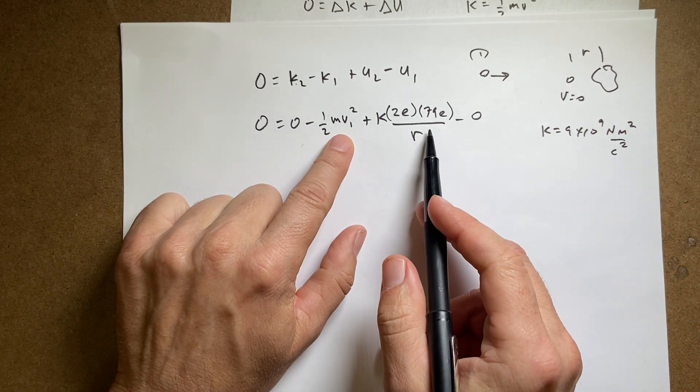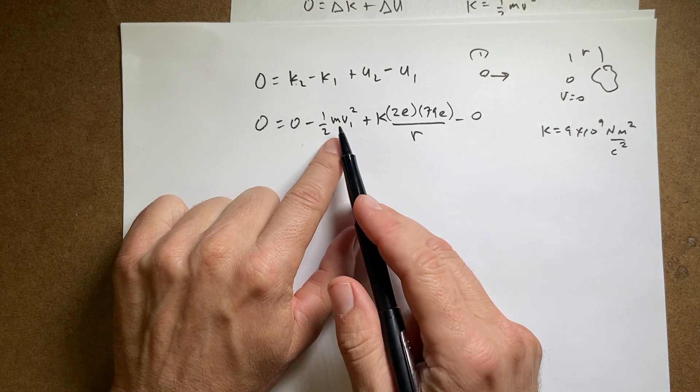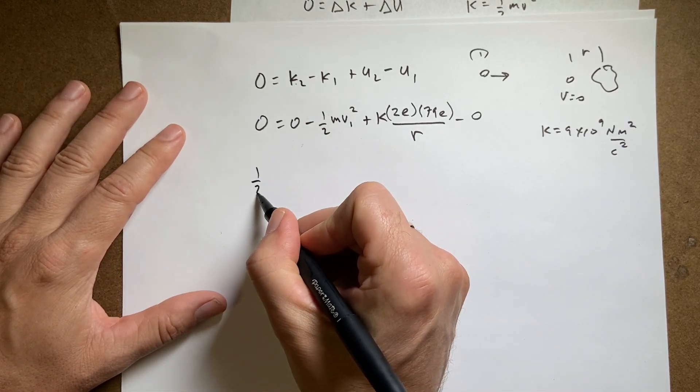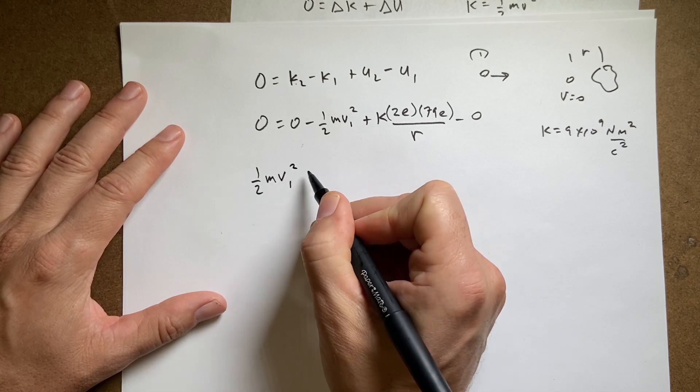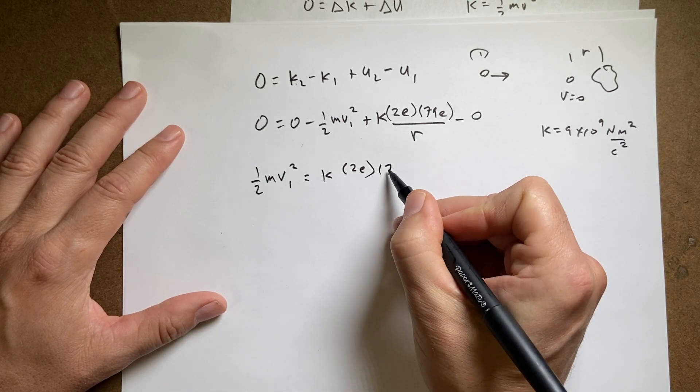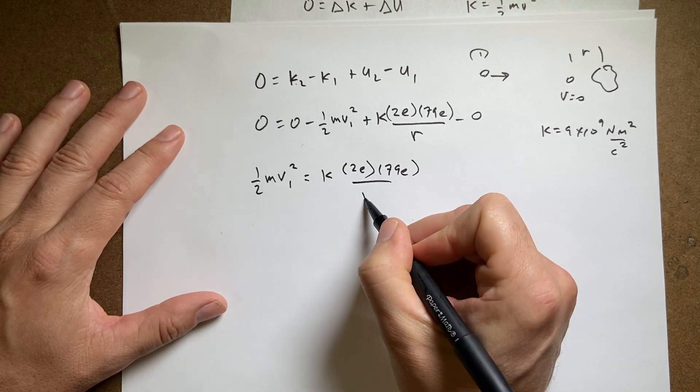And v is a number. So let's add the kinetic energy to both sides. I get one half mv1 squared equals k times 2e times 79e over r.